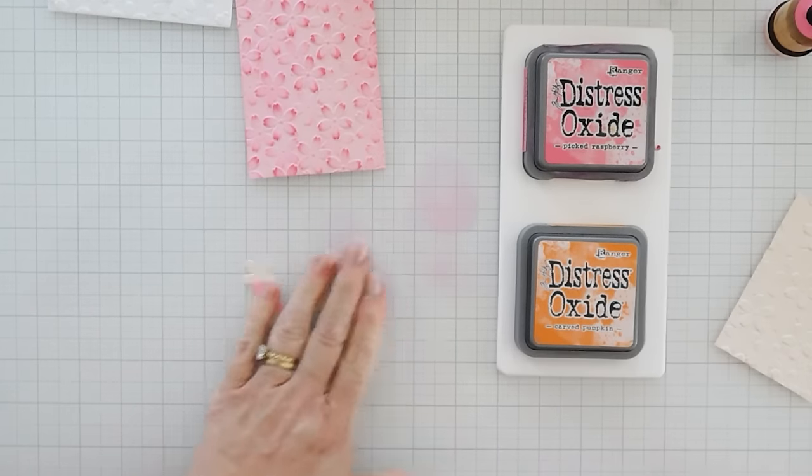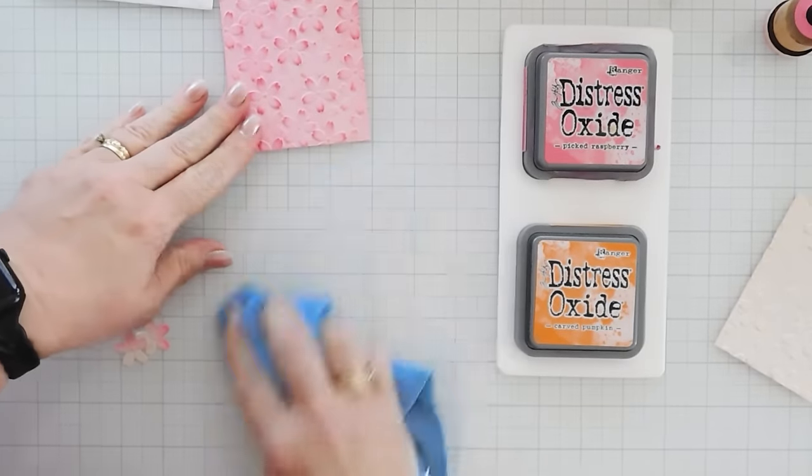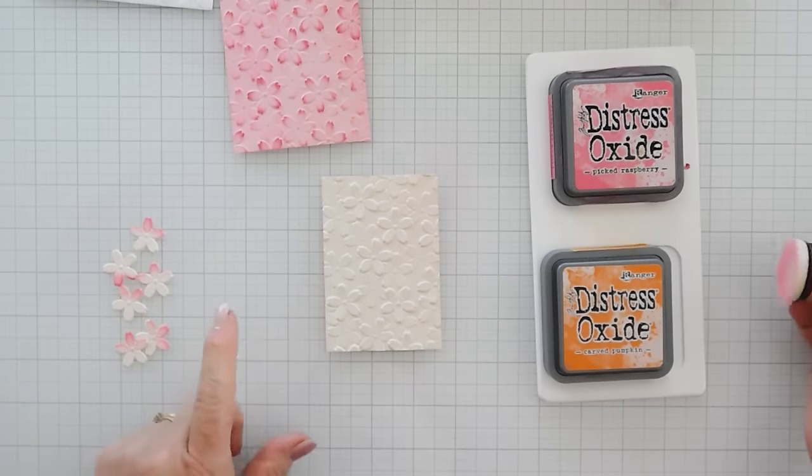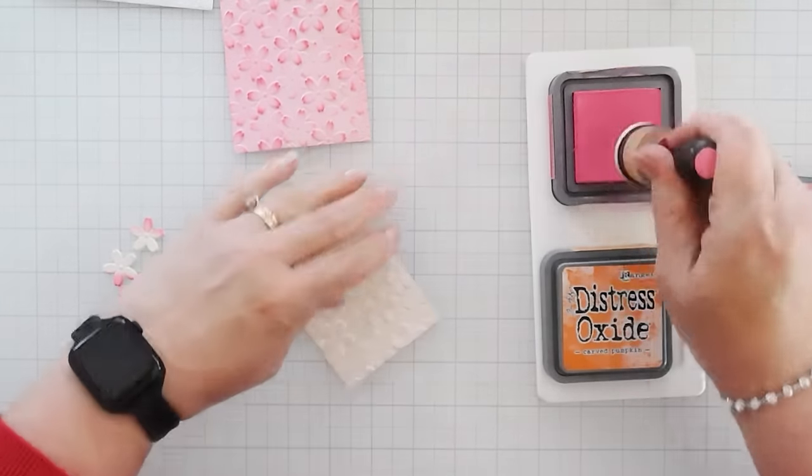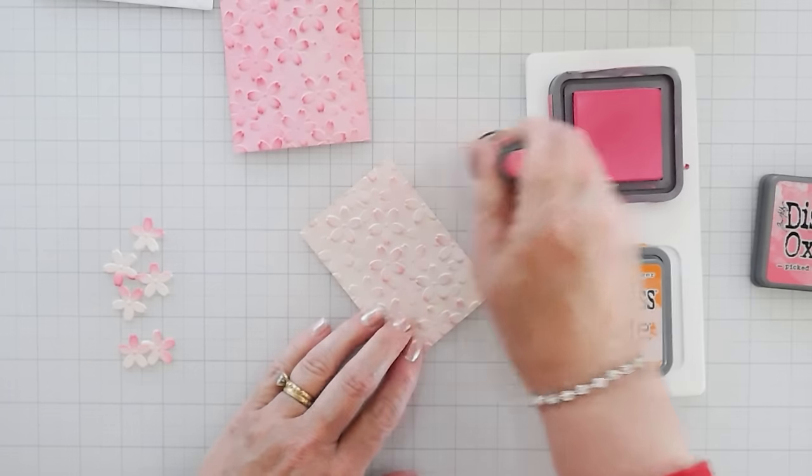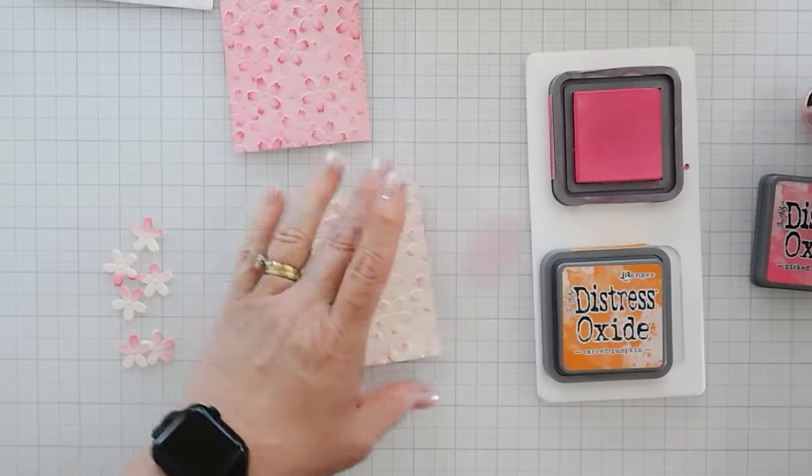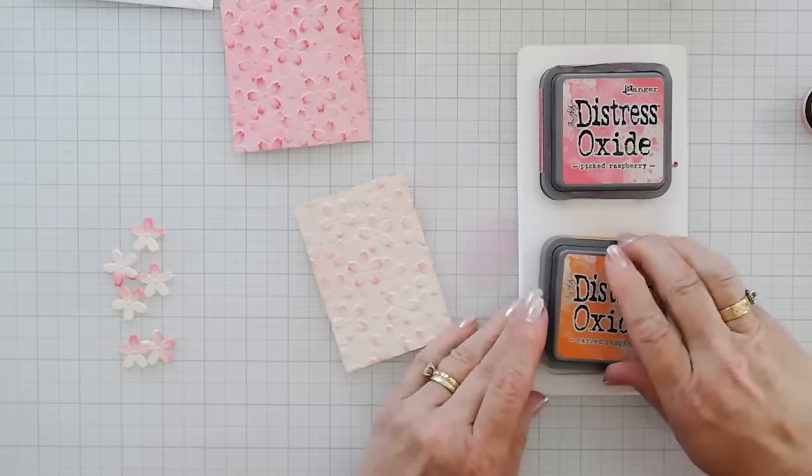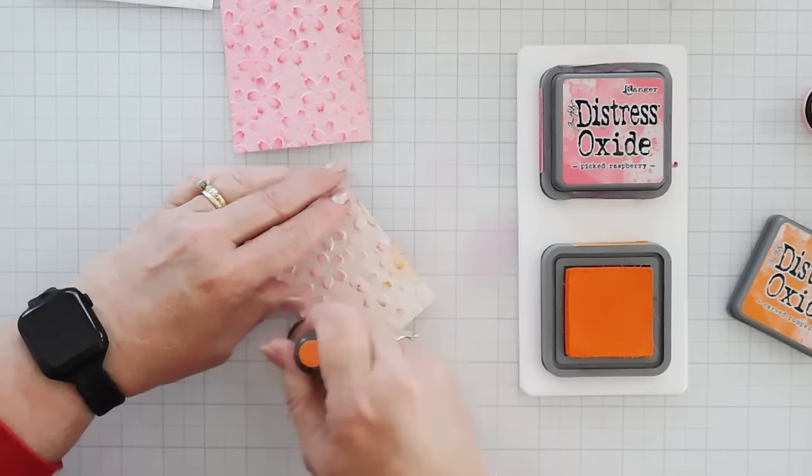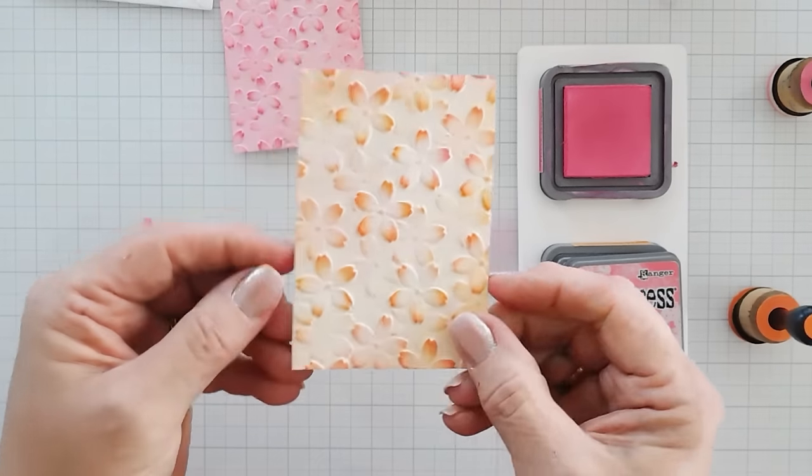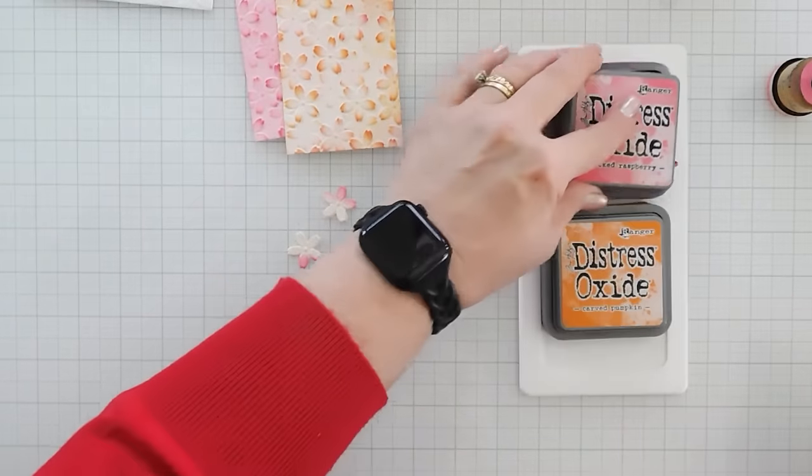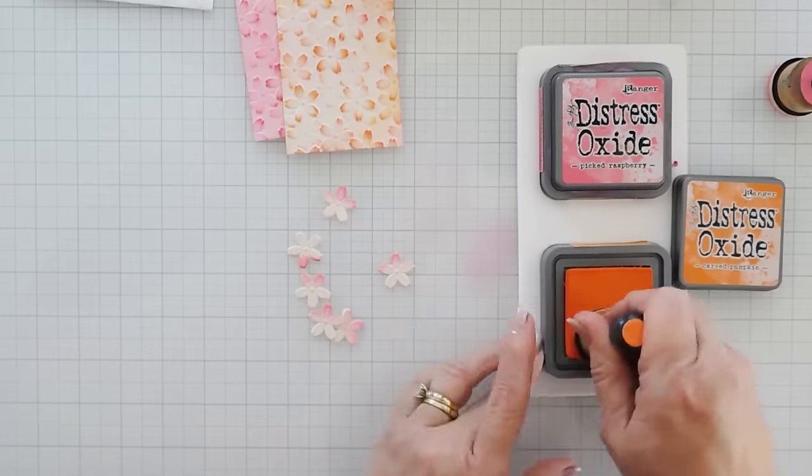I'm going to keep the pink out because we're going to use that. I am going to wipe my surface off. And I'm going to bring in my Barely Peach. Now, Barely Peach, I'm going to lightly go over it with Picked Raspberry. Just a little bit. And then I'm going to add some of my Carved Pumpkin. And I'm going to call that good. And I'm going to bring back my single flowers. And I'm going to add a little bit more orange to these.